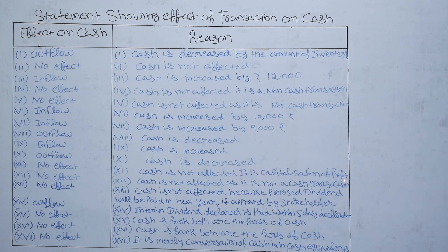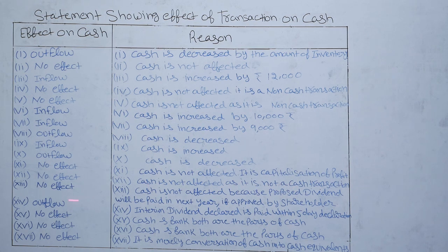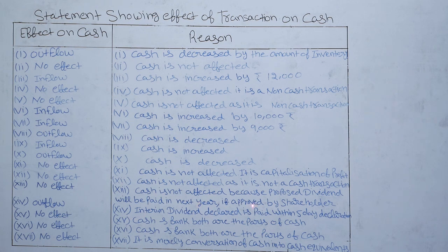For the twelfth item — writing off bad debts against the provision for doubtful debts — this is also a non-cash transaction, so there is no effect on cash. Reason: cash is not affected as it is not a cash transaction. For the thirteenth item — dividend proposed by directors — this is also a non-cash transaction. Reason: cash is not affected because the proposed dividend will be paid in the next year if approved by the shareholders.